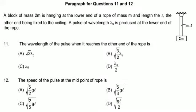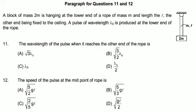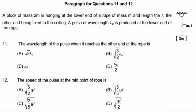Today's question: a block of mass 2M is hanging at the lower end of a rope of mass M and length L, the other end being fixed to the ceiling. A pulse of wavelength lambda₀ is produced at the lower end of the rope. The first question is: what is the wavelength of the pulse when it reaches the other end of the rope? Options: A) √3·λ₀, B) √(3/2)·λ₀, C) λ₀, D) λ₀/2.